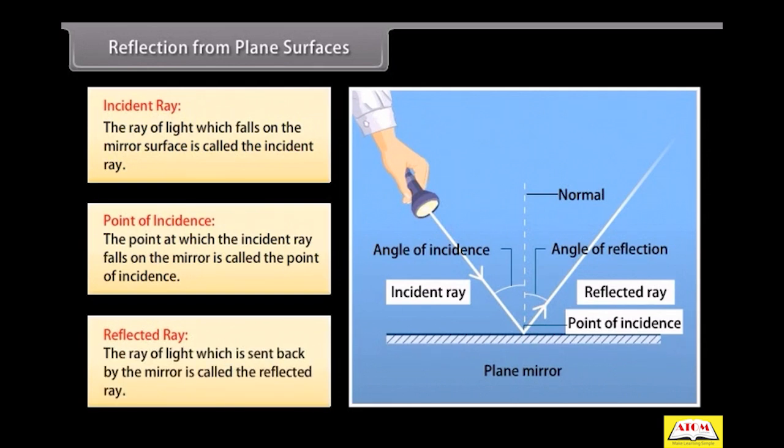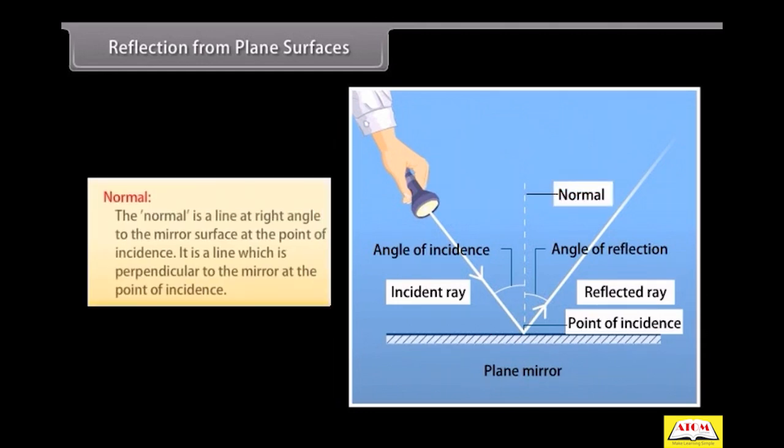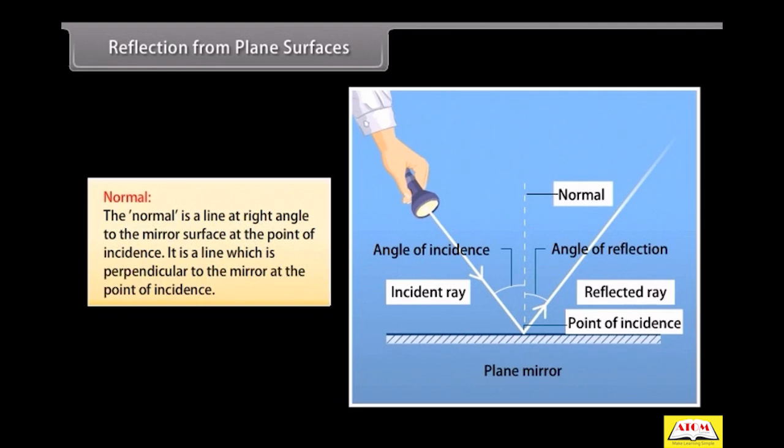Reflected ray: which is sent back by the mirror is called the reflected ray. Normal: The normal is a line at right angle to the mirror surface at the point of incidence. It is a line which is perpendicular to the mirror at the point of incidence.